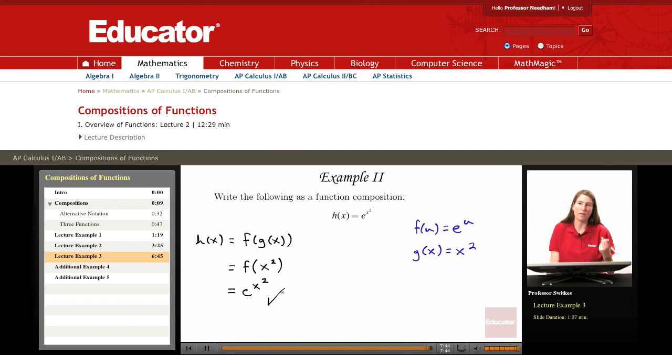And so we've written h as a composition f of g of x. And that concludes this portion of the tutorial. And we have two further examples if you'd like to look at them.